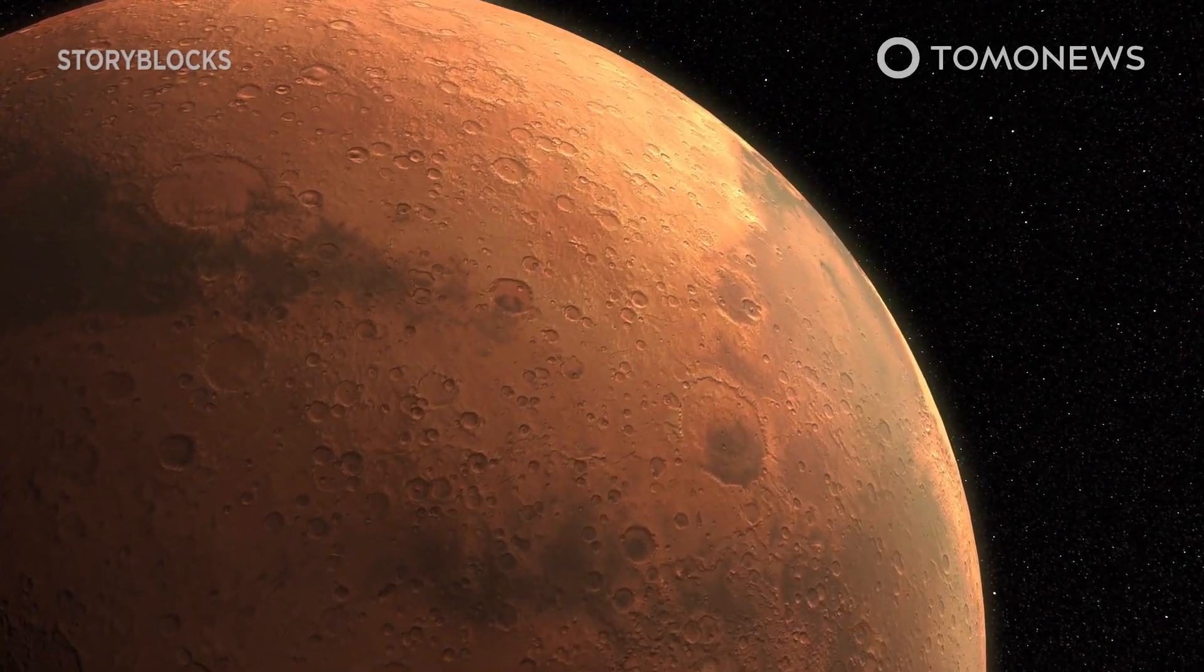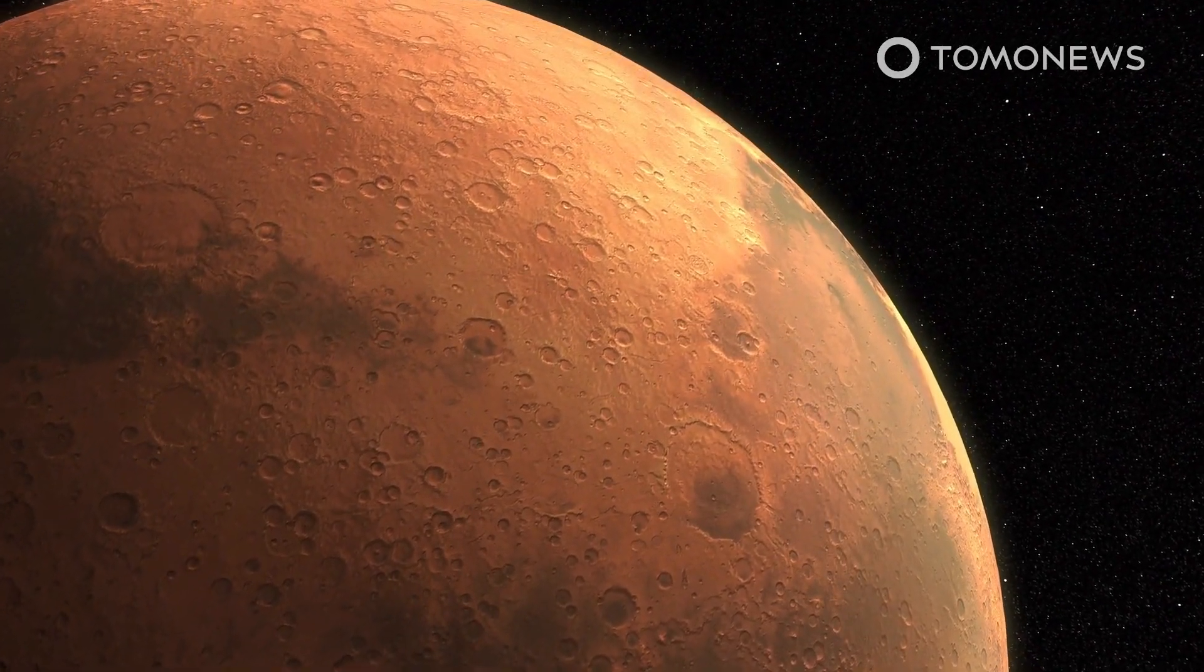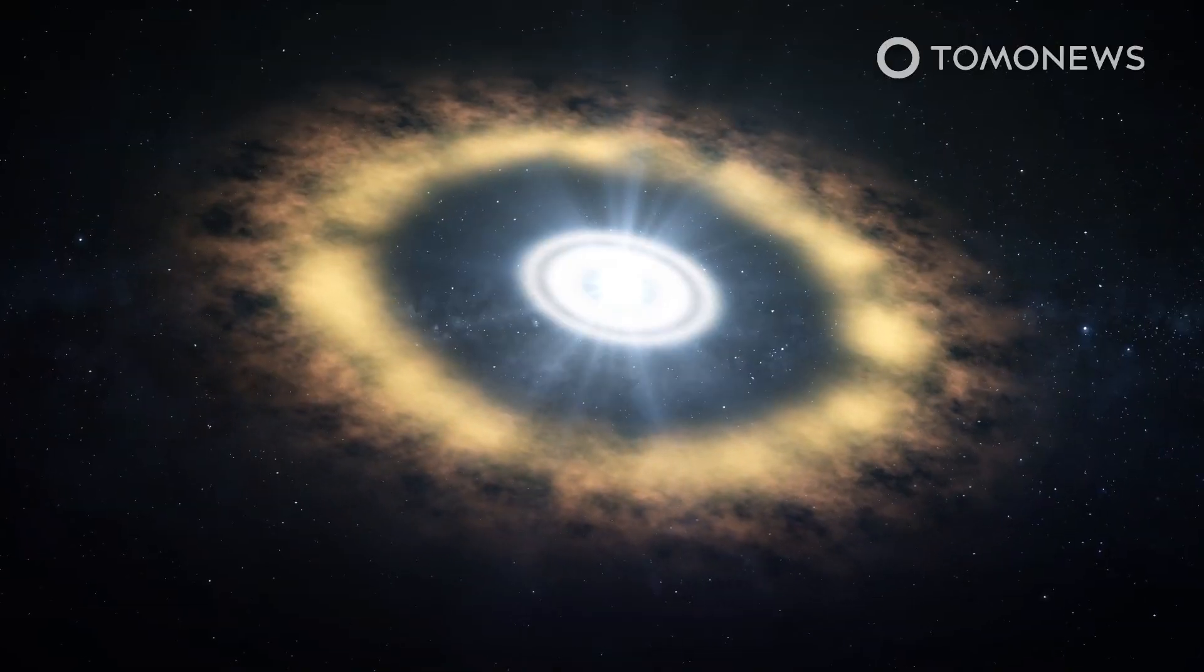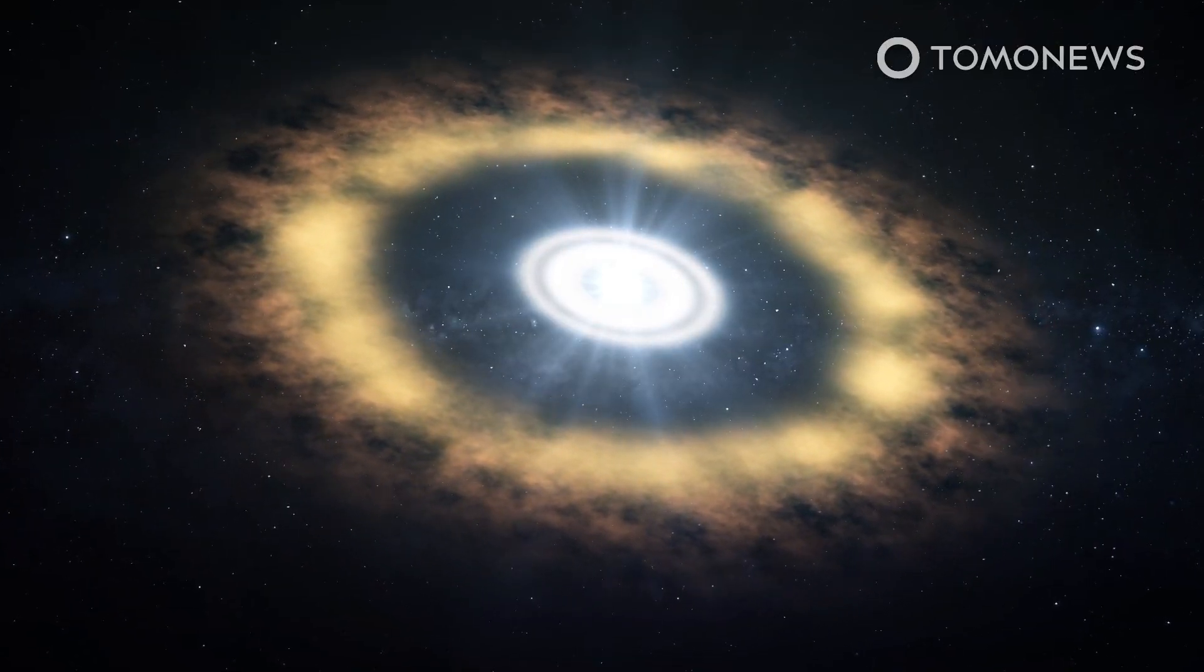A new study hints that Mars could have been formed over a far longer timescale than previously thought. The early solar system was a chaotic place with many large-scale collisions.